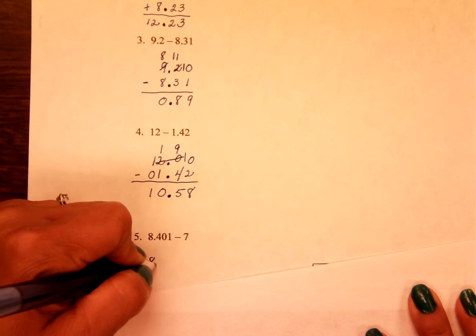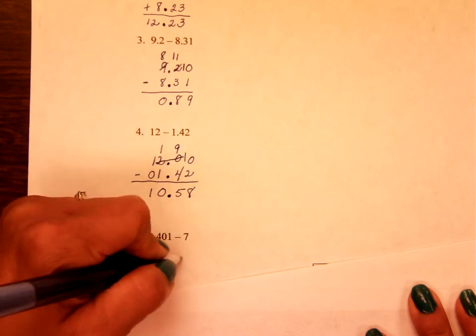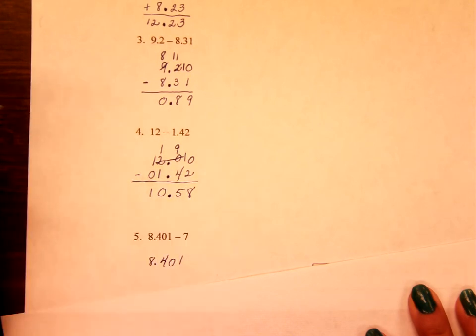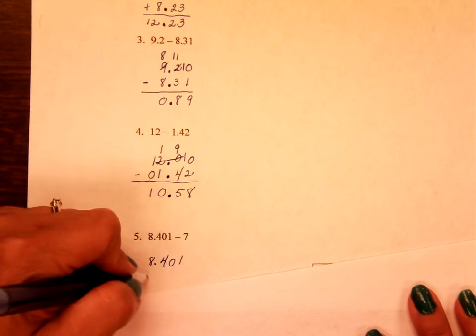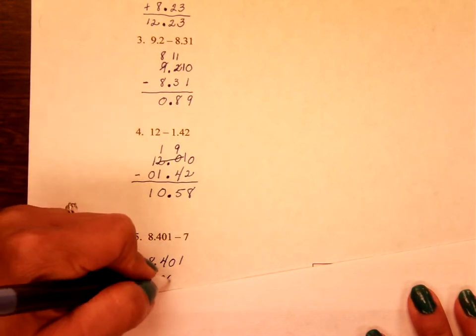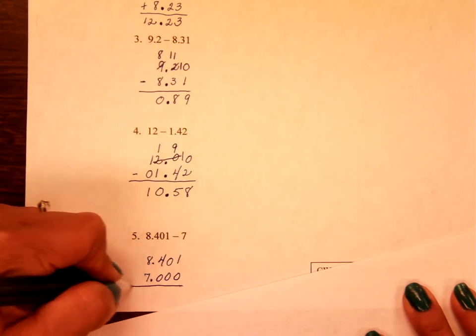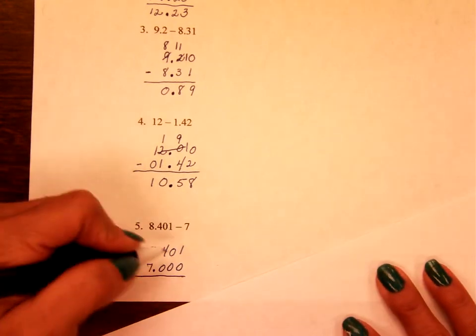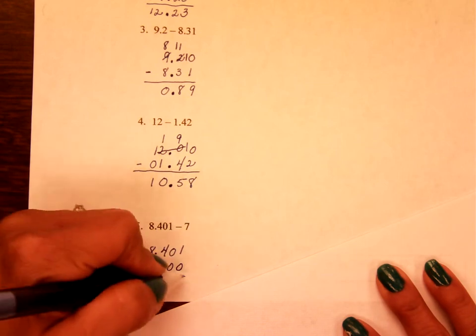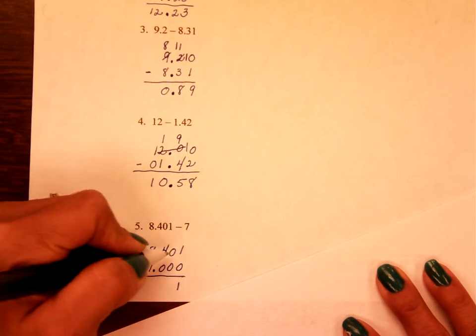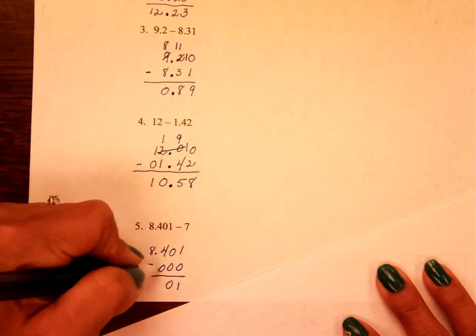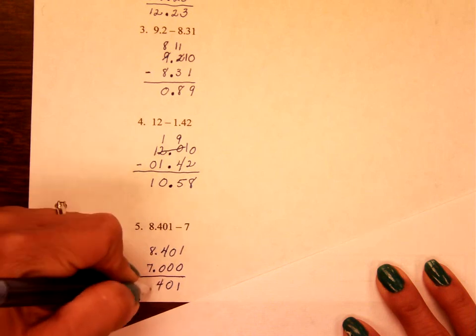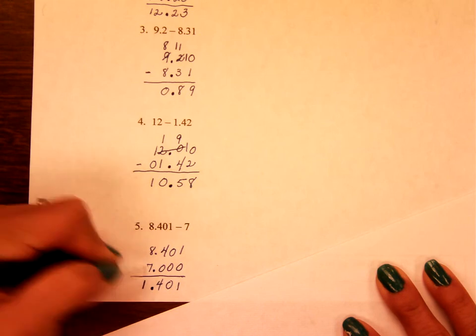So you should have lined up your numbers vertically. You have a whole number of 7, like $7. So 7's here in the decimal. Add your zeros. Now you're going to subtract. 1 minus nothing is 1. 0 minus 0 is 0. 4 minus 0 is 4. Bring that decimal straight down. And 8 minus 7 is 1.